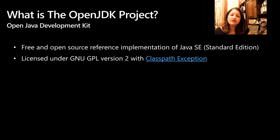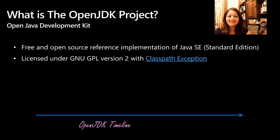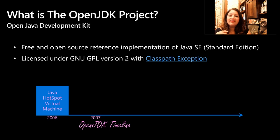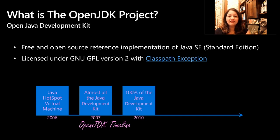Let me provide a quick timeline with respect to OpenJDK becoming open source. Many of you may know that OpenJDK used to be SunJDK. Back in 2006, Sun open-sourced the Java Virtual Machine, which is called Hotspot. Then in 2007, Sun open-sourced almost all of the JDK itself. In 2010, 100% of the JDK was open-sourced, and 2010 was also the time when Oracle acquired Sun.